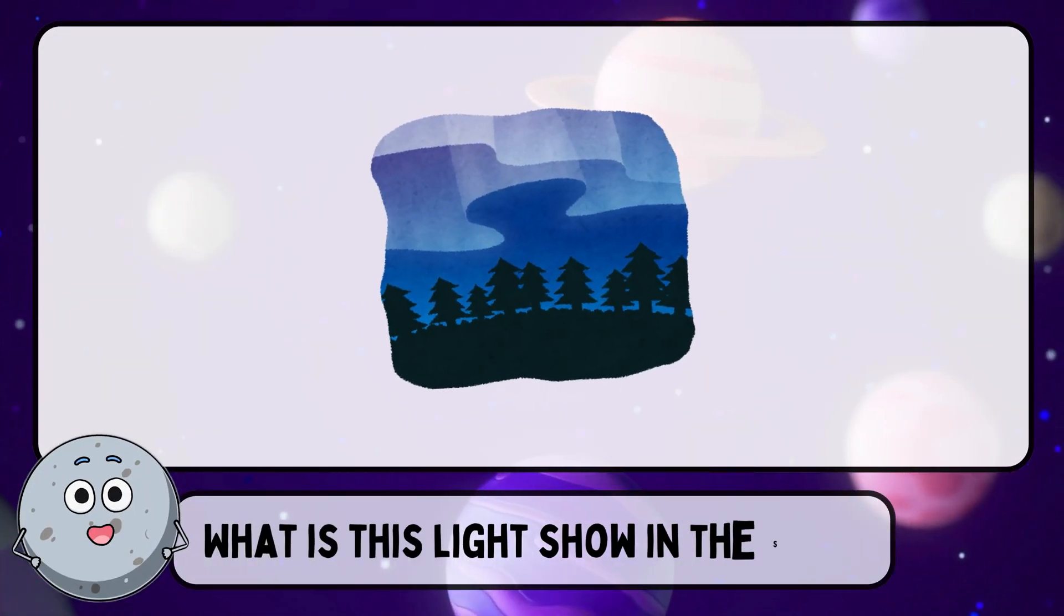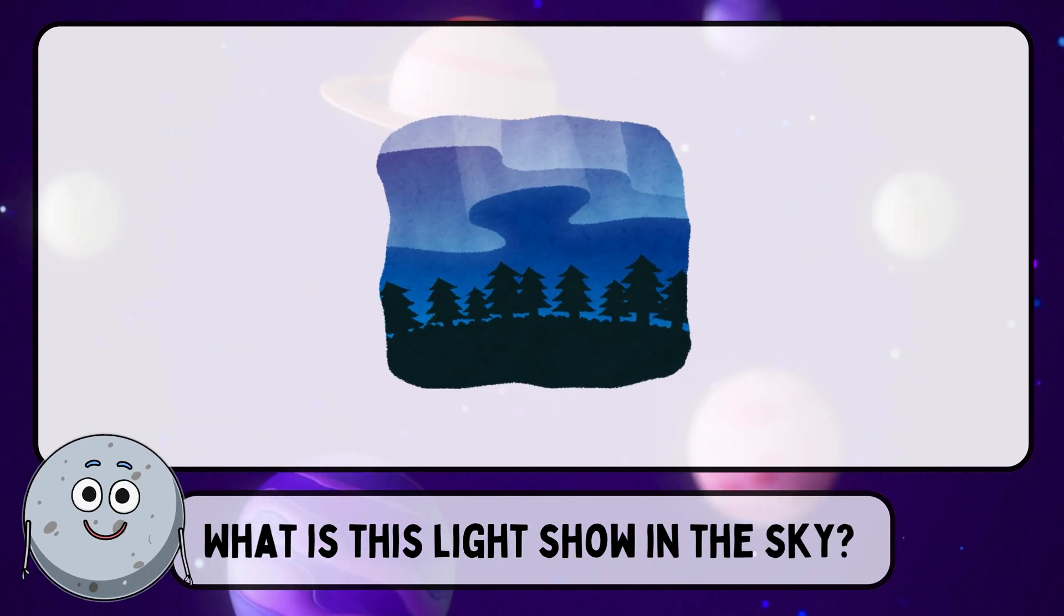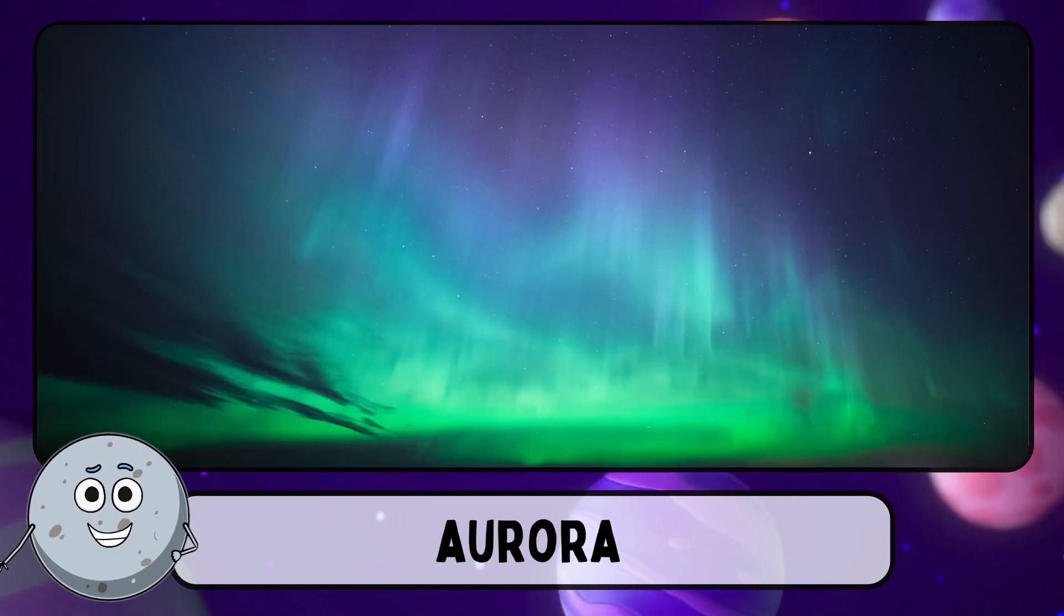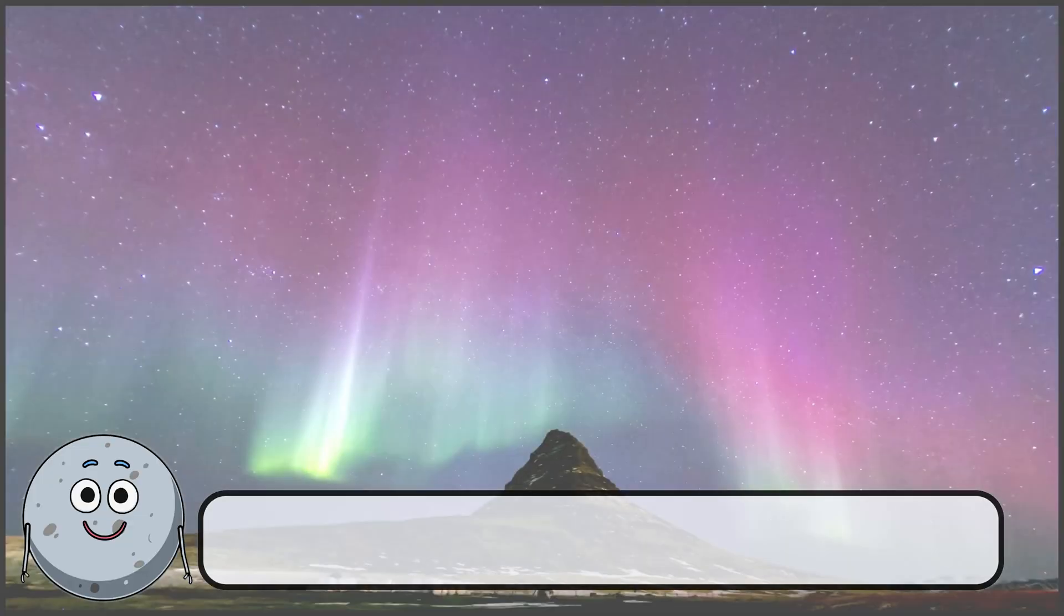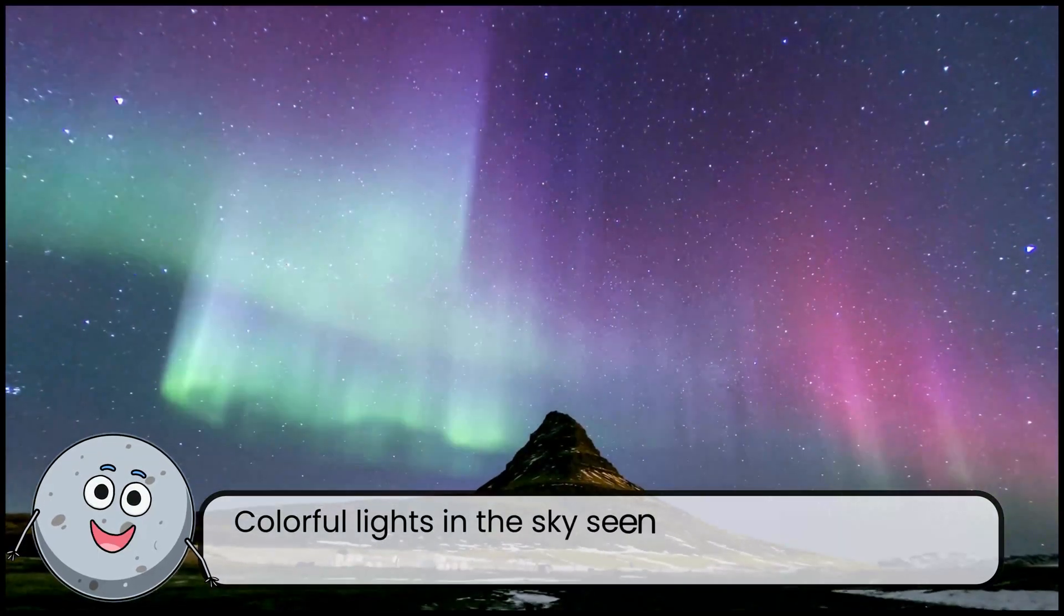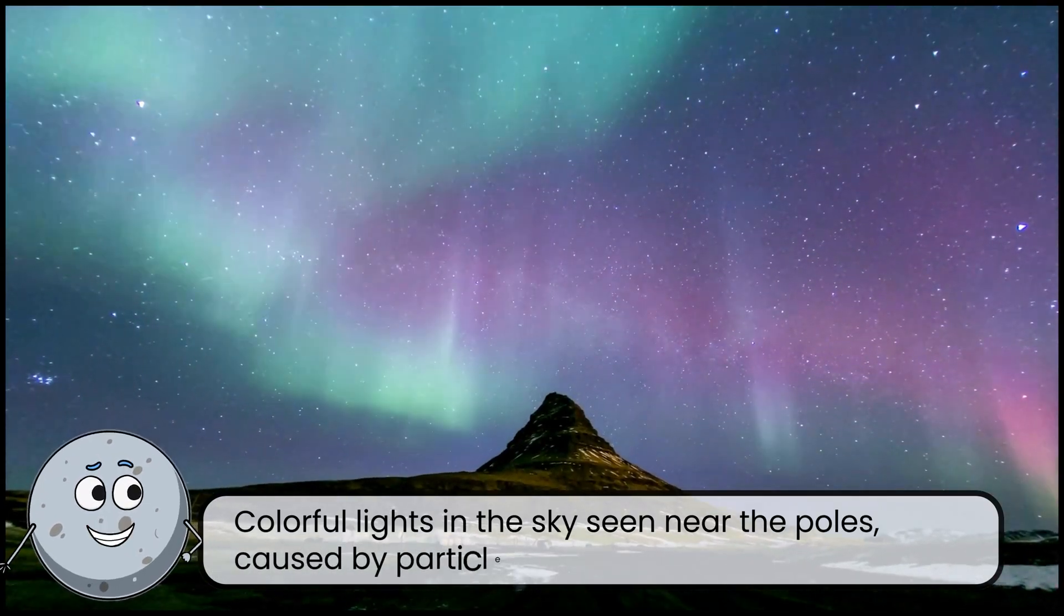What is this light showing in the sky? This is an aurora. Colorful lights in the sky seen near the poles caused by particles.